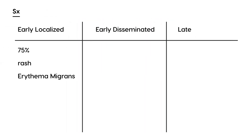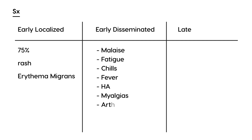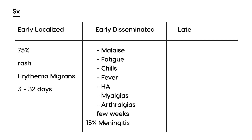That's the first initial presentation. Once the spirochete disseminates into the bloodstream, you can get systemic symptoms including malaise, fatigue, chills, fever, headache, and myalgias and arthralgias — which in layman's terms are muscle pain and joint pain. This occurs about three to thirty-two days after the tick bite. Also, in about 15 percent of patients in the early disseminated phase, you can get neurologic symptoms like meningitis, Bell's palsy, and facial palsy.